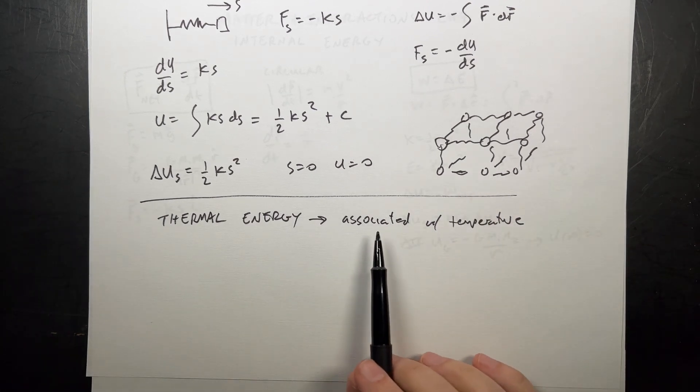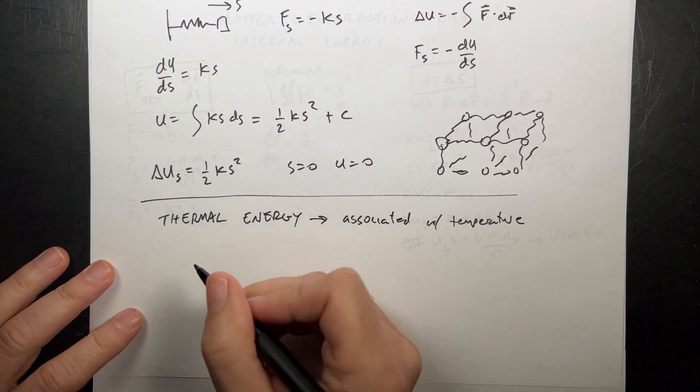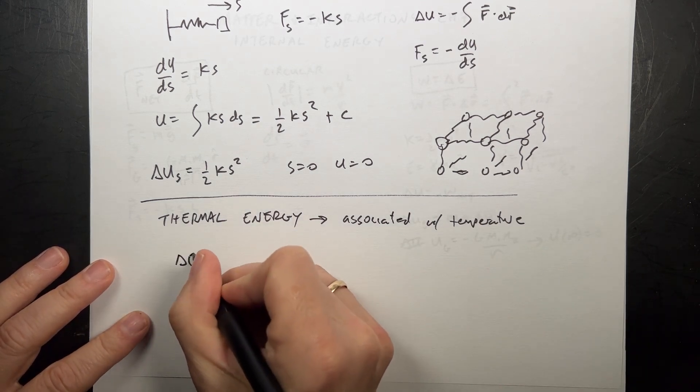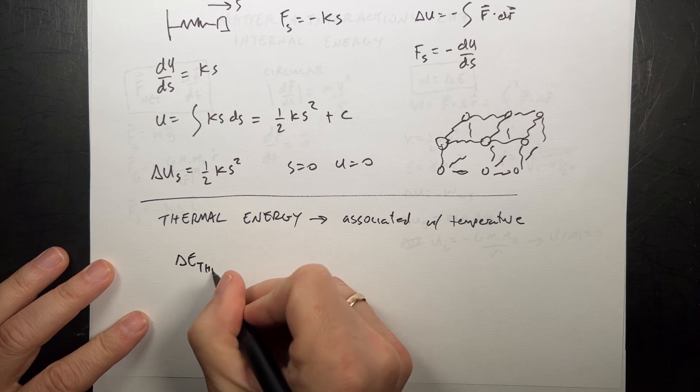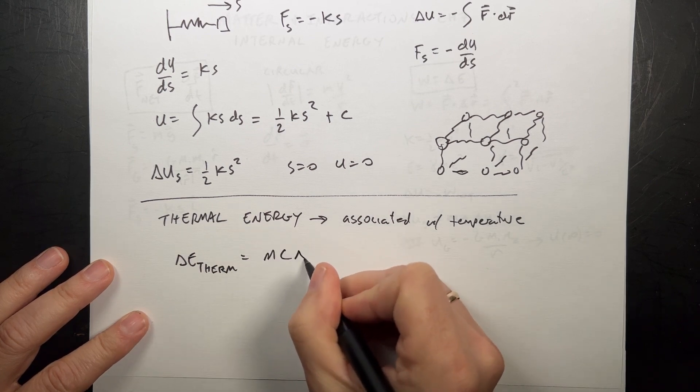We can associate that temperature with an energy and we call that thermal energy. The change in thermal energy, delta E therm.